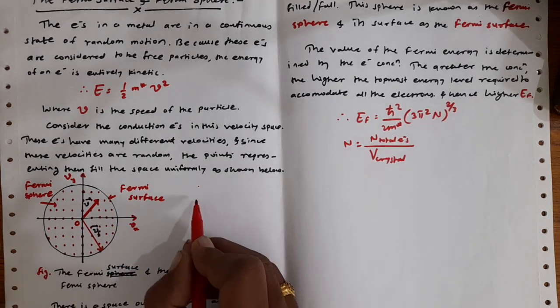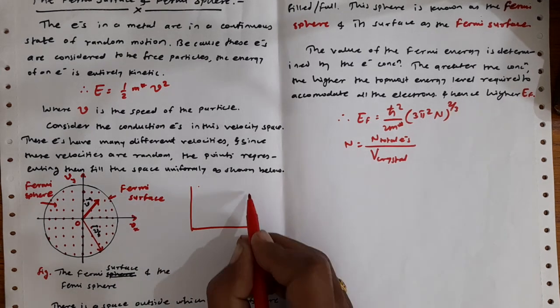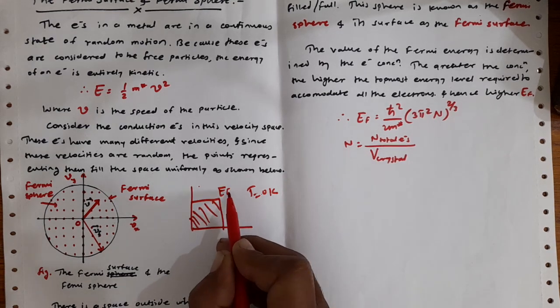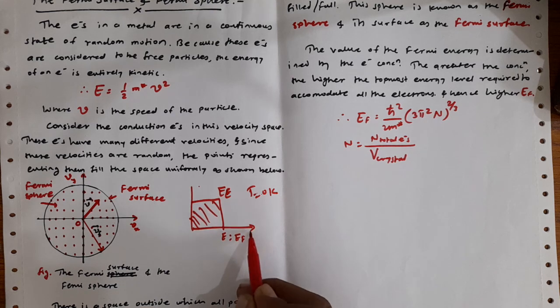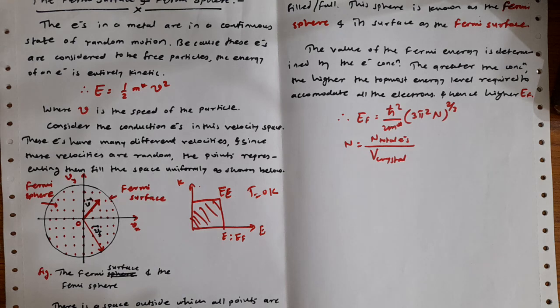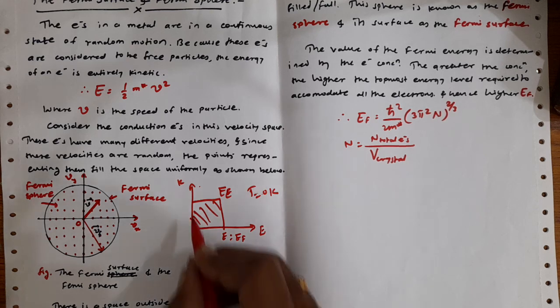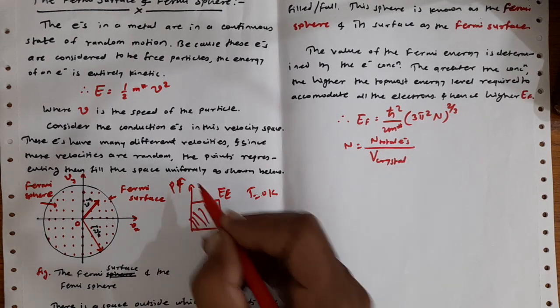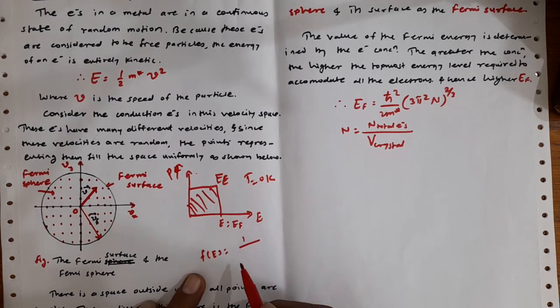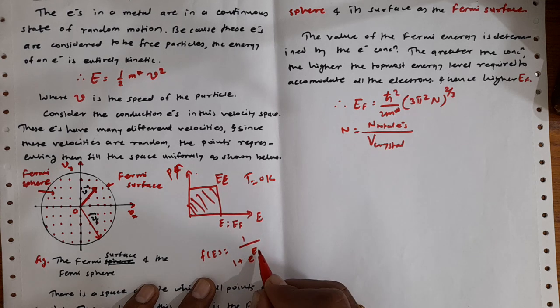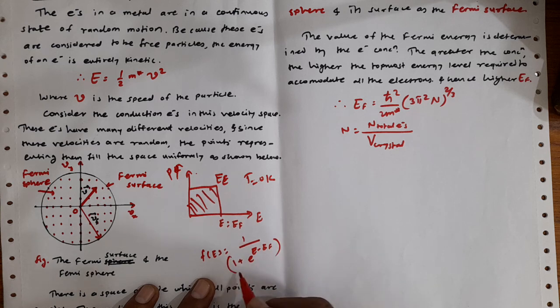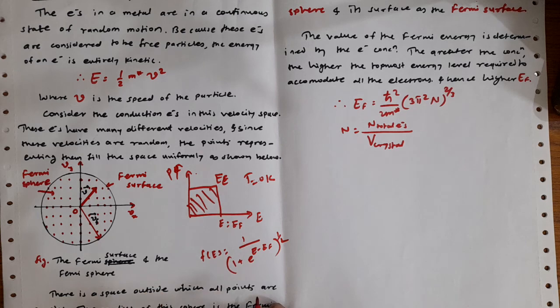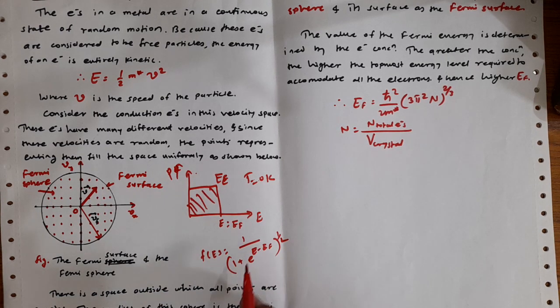These electrons have many different velocities and since these velocities are random, the points representing them fill the space uniformly as shown in the figure. This is analogous to the Fermi-Dirac distribution at T equals zero Kelvin. This represents the filling of electrons up to the Fermi energy level. This is E equals EF, energy versus occupancy. The probability of occupancy is given by F(E) equals 1 over 1 plus e raised to (E minus EF) over kT.